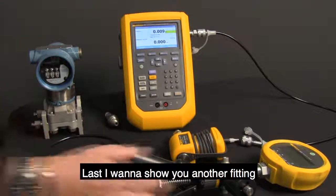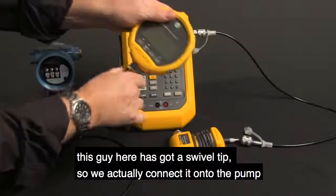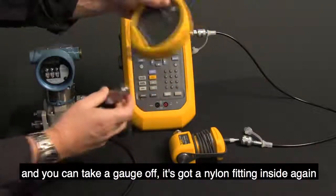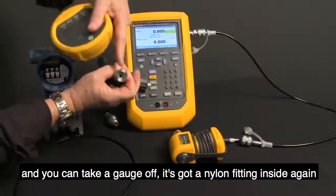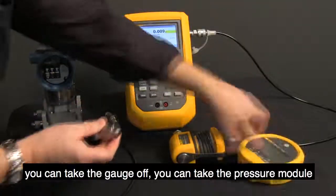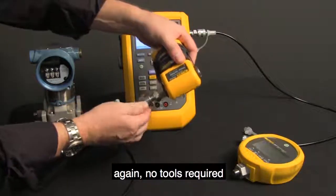Lastly, I want to show you another fitting. This has a swivel tip, so we connect it onto the pump and you can take the gauge off. It's got a nylon fitting inside again. You can take the gauge off, you can take a pressure module, plug that in. Again, no tools required.